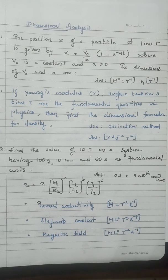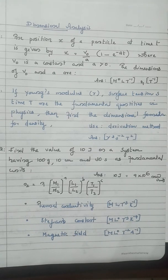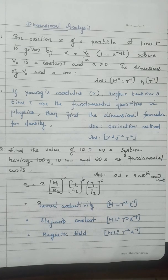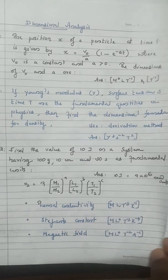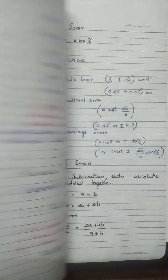Another important concept for IIT or JEE Main: find the value of 10 joules on a system having 100 gram, 10 centimeter, and 30 seconds as fundamental units. Use the formula: n₂ = n₁ × (M₁/M₂)^a × (L₁/L₂)^b × (T₁/T₂)^c. Applying this concept gives the answer; such questions are very important.